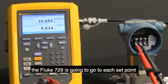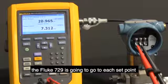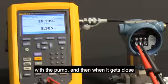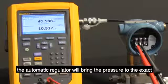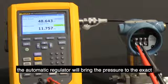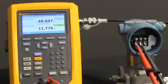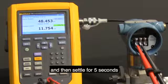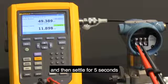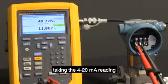The Fluke 729 is going to go to each set point with the pump, and then when it gets close, the automatic regulator will bring the pressure to the exact 50 psi setting in this particular test spot, and then settle for 5 seconds, taking the 4 to 20 milliamp reading.